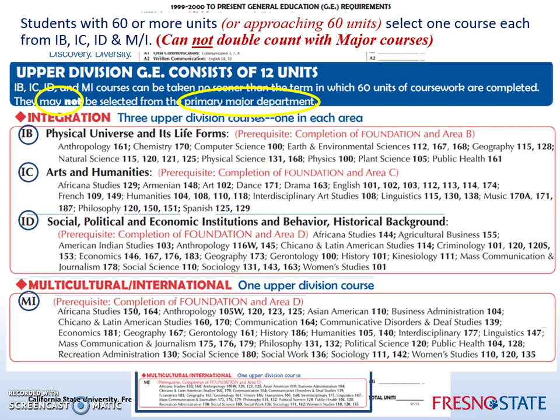These courses also have prerequisites. For example, for area IB, you must first complete your foundation courses A1, A2, A3, and B4, as well as all of area B.